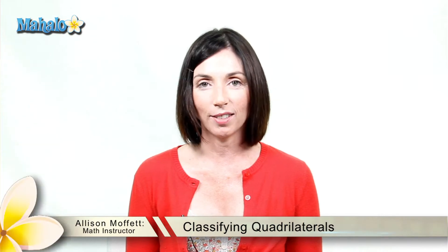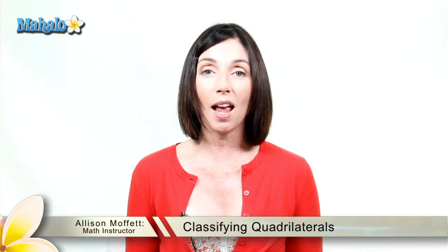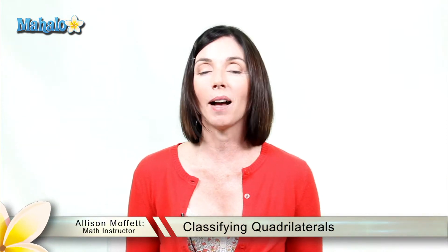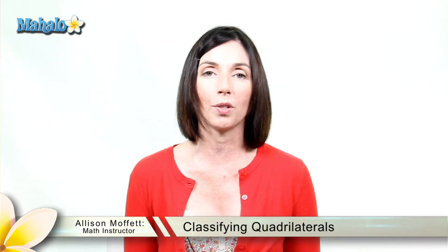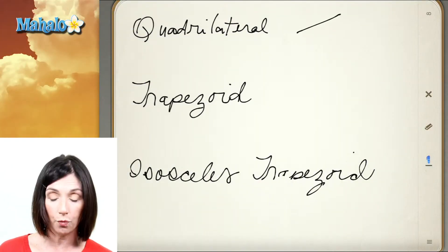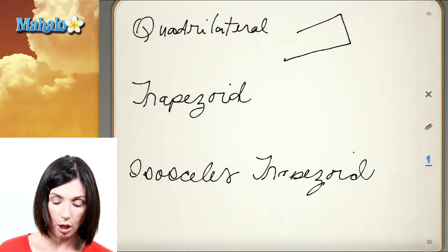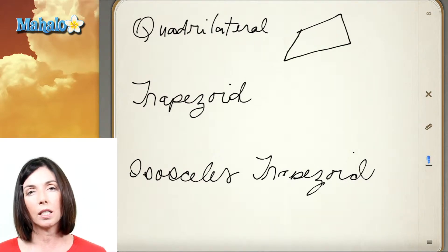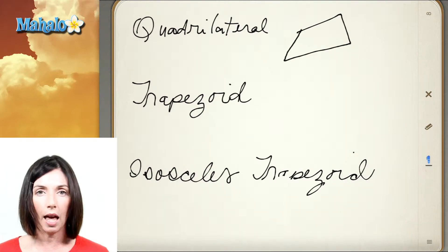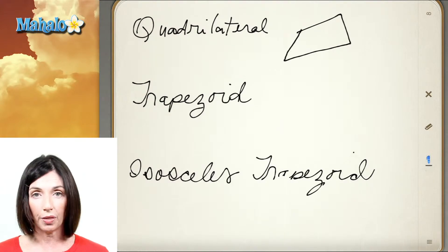Hey, it's Alison from Mahalo.com, and today I want to talk to you about classifying quadrilaterals. A quadrilateral is simply a closed four-sided figure — it has four sides, and closed means that those four sides connect together so there's no opening within it.